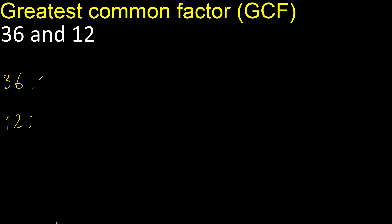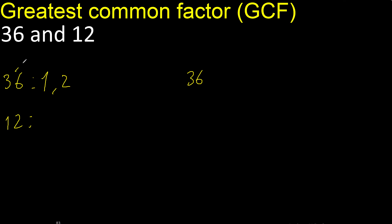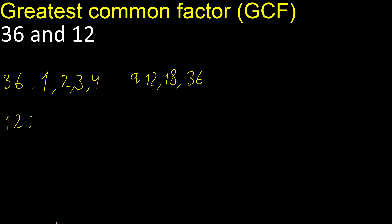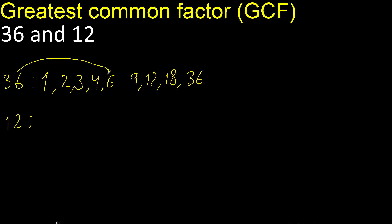Factors always start with 1. 36 divided by 1 is 36. Next, divided by 2 is 18. Next, divided by 3 is 12. Next, divided by 4 is 9. Next, cannot be divided by 5. Next, divided by 6 is 6. 6 is here.